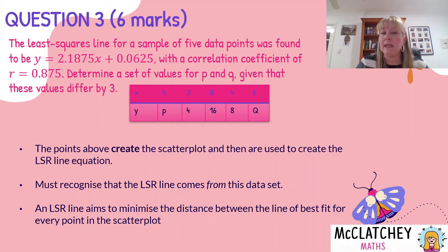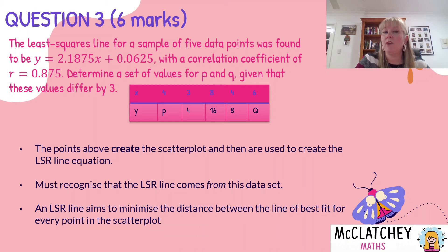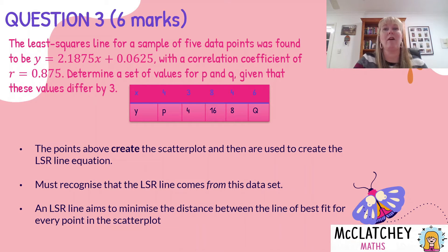On your formula sheet you'll find that we've got a coefficient of x, which is b, and a constant, which is a. Both a and b are calculated using means, standard deviations, and Pearson's correlation coefficient. So Pearson's correlation coefficient comes before a and b are derived — this is important to understand.